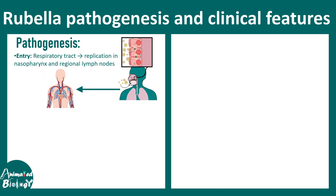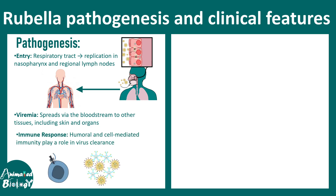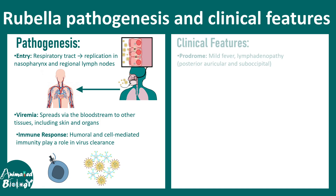The virus enters the bloodstream causing viremia and can affect several other tissues and organs, including the brain and liver. The immune response against this virus involves humoral immune response — that is, antibody-mediated response — or cell-mediated immune response, which involves cytotoxic killer T cells.